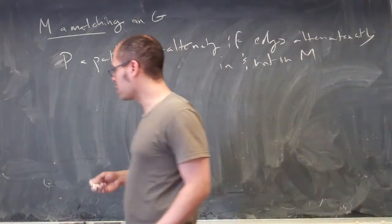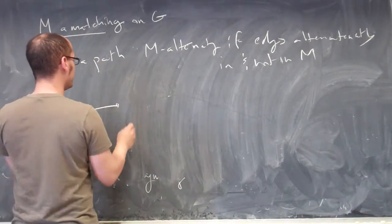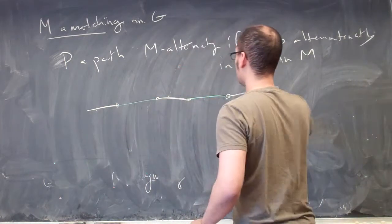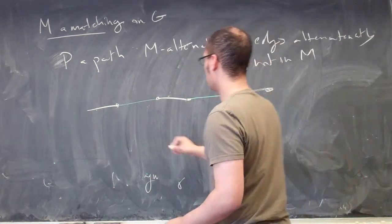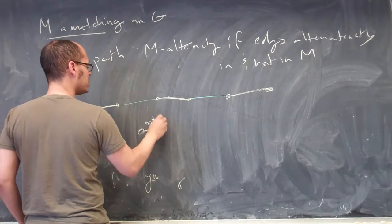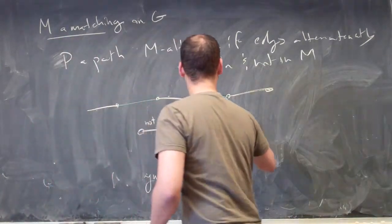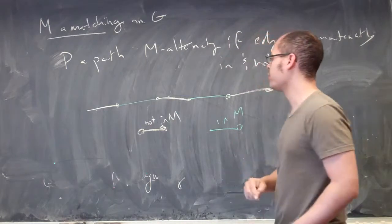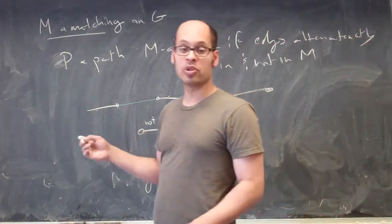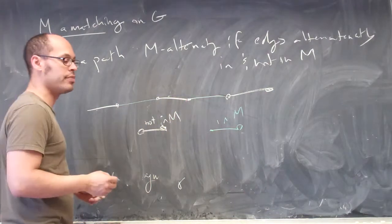An M-alternating path would look something like this: we have edges alternating between not in M and in M. So if you have a path whose edges alternate between not being in M and being in M, this is called an M-alternating path.